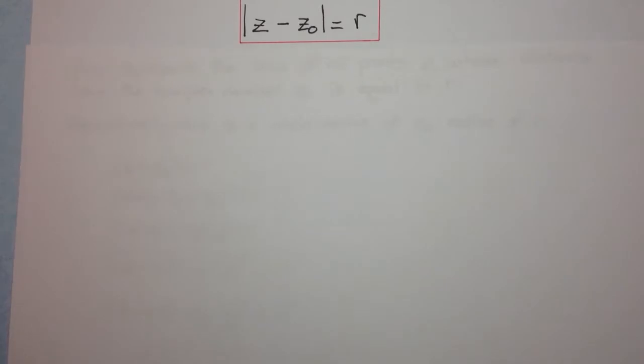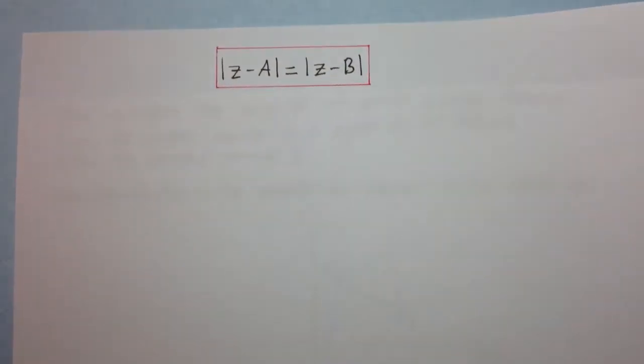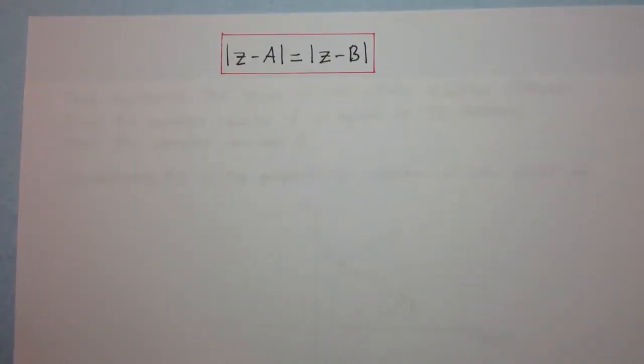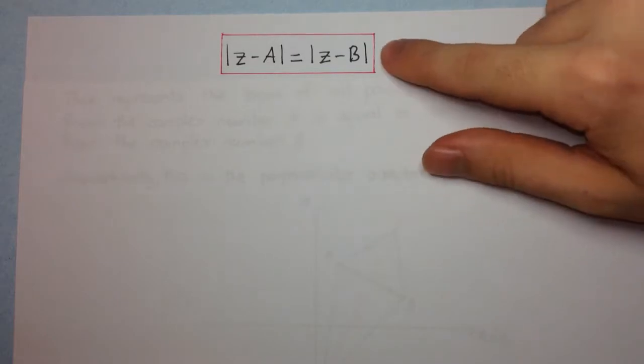But I want to spend time on some of the harder ones. So let's have a look at another one. So here's another standard form. We have that the modulus of z minus a is equal to the modulus of z minus b.